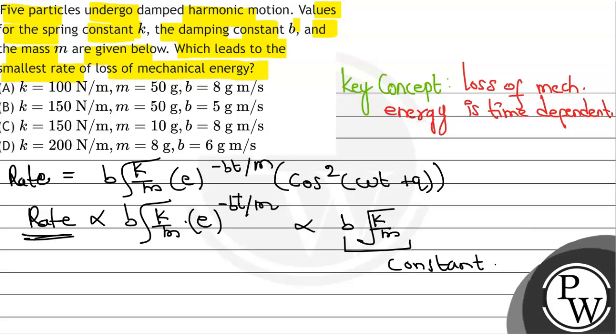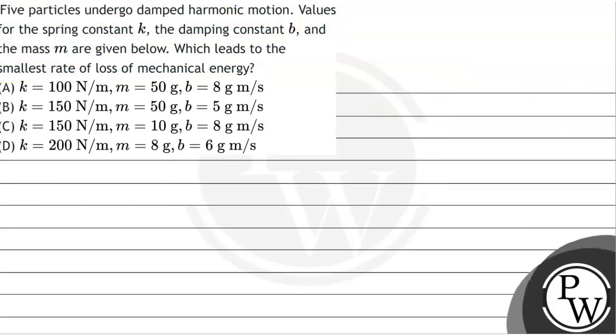Now we will calculate b times the square root of k over m for each case. So for the first case, now first case.